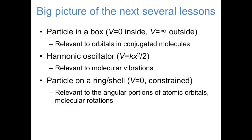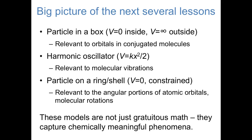After that, we'll look at a particle on a ring, or a particle on a spherical shell, in which the potential energy operator is again zero, but the object is constrained to a particular curve or surface. This model turns out to be relevant to the angular part of atomic orbitals and also the rotations of diatomic molecules. In the next several lessons, we'll see a lot of math, and it's easy to get lost in that math. But I want to emphasize that these models are not just gratuitous math — each of them actually does capture chemically meaningful phenomena.